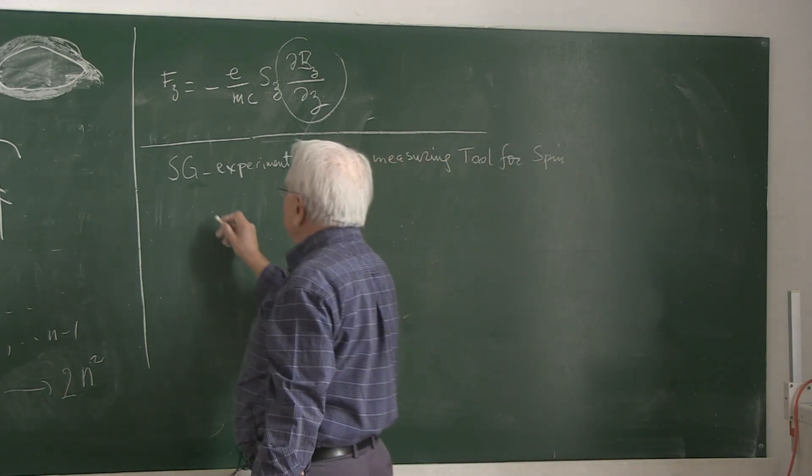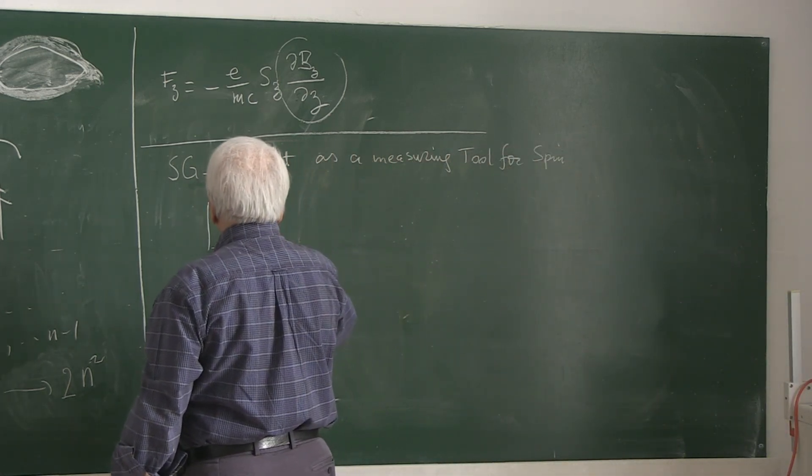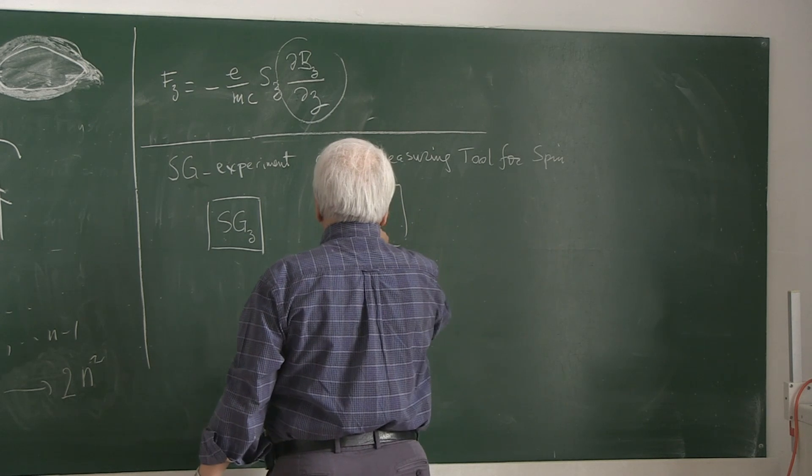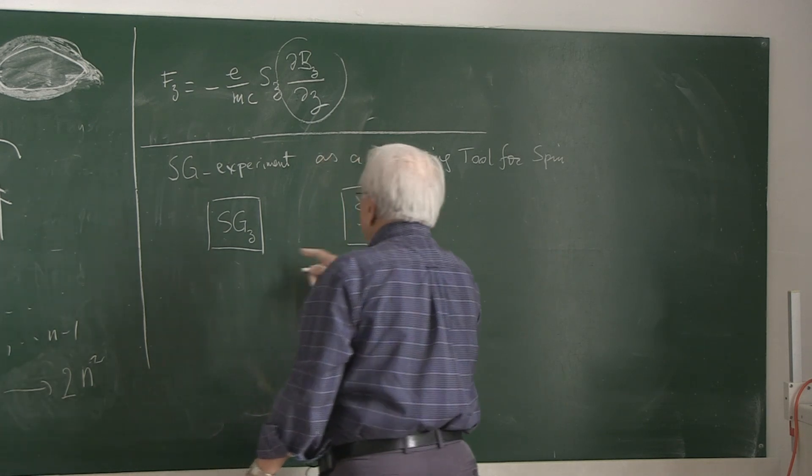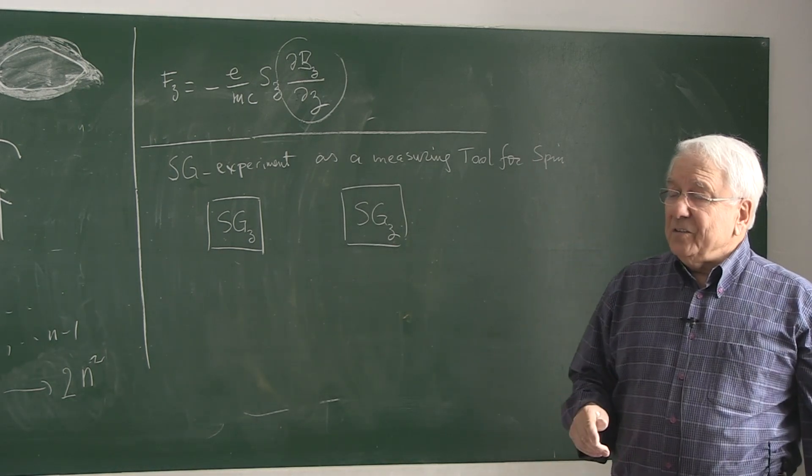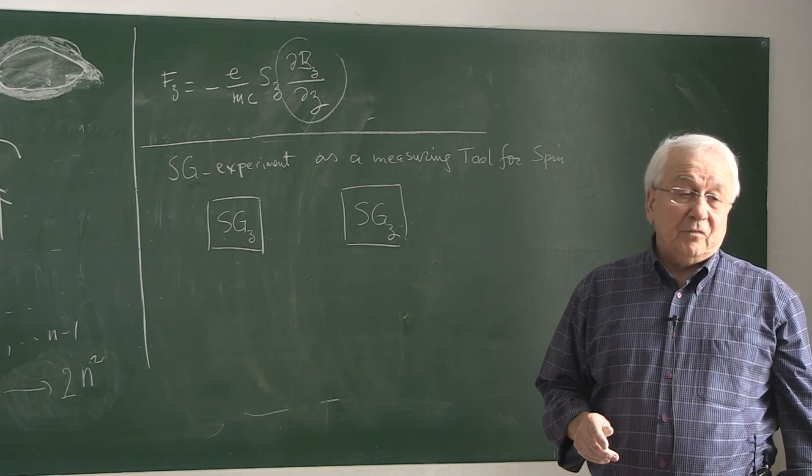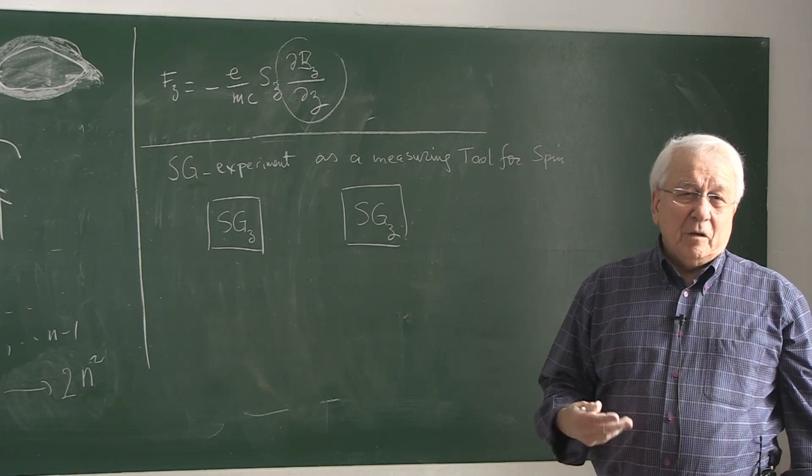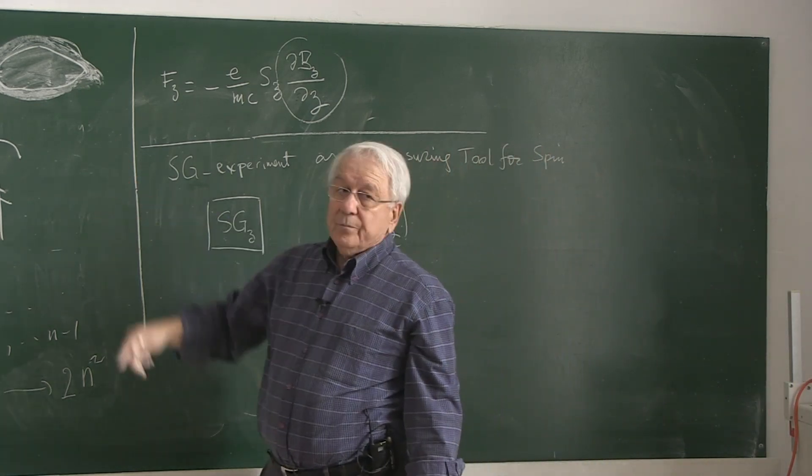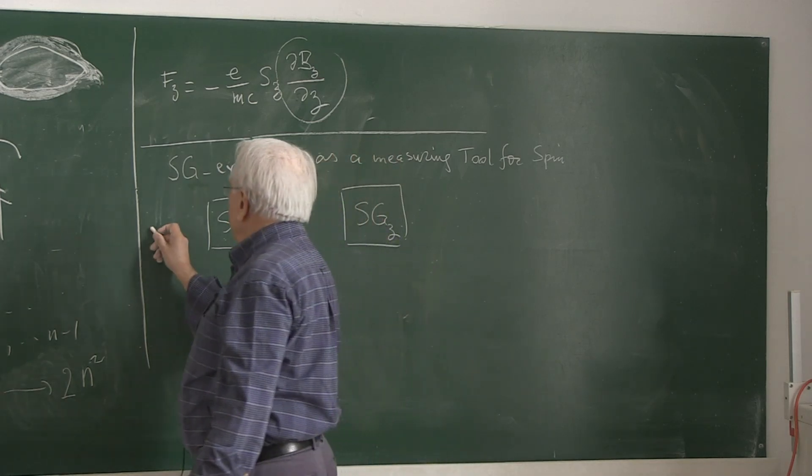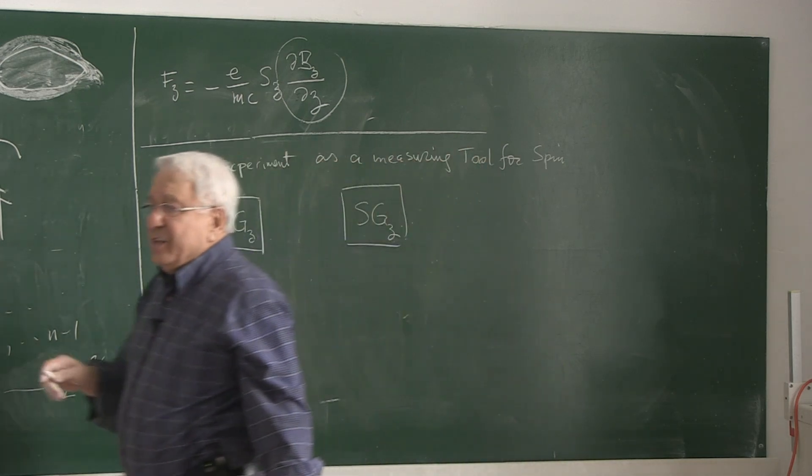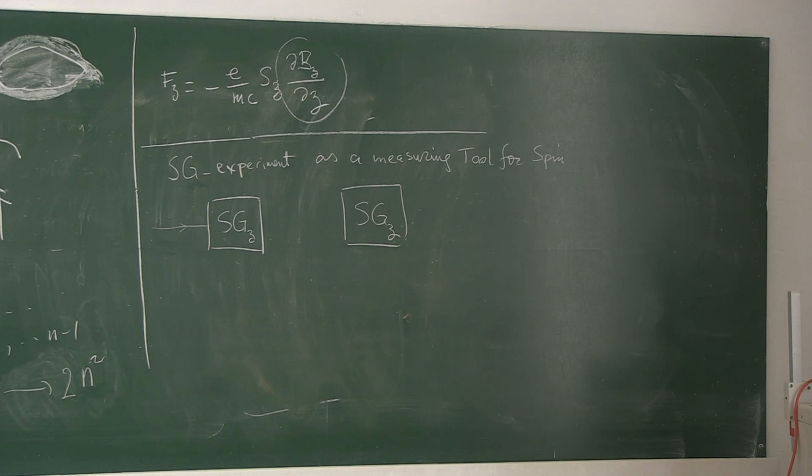If we use two Stern-Gerlach in a sequence, if I put that Z or X or Y, it means the gradient magnetic field is in the Z direction. So it creates a splitting in the Z direction. That's the meaning of symbol. Now, from the oven, we take a beam, whatever they are, a beam of particles. We send it through the first Stern-Gerlach gadget.